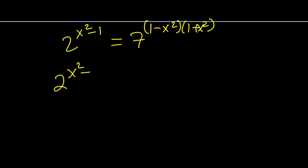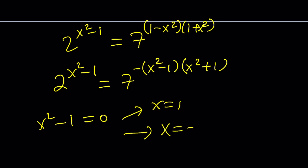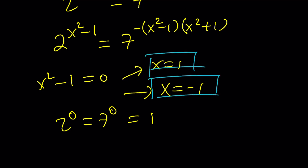We can write this as: 2 to the power (x squared minus 1) equals 7 to the power negative 1 times (x squared minus 1) times (x squared plus 1). Notice we have x squared minus 1 on both sides. If x squared minus 1 equals 0 — meaning x equals 1 or negative 1 — then we get 2 to the power 0 equals 7 to the power 0, which is true since both equal 1. So x = 1 and x = −1 are solutions. Since x squared and x to the fourth are even powers, both work.